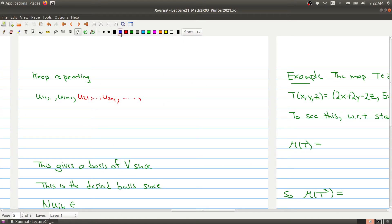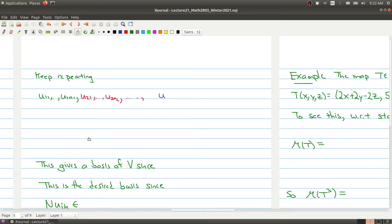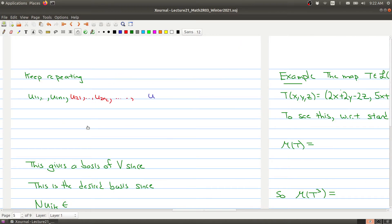So we keep repeating, and at the end we would have ul1 up to uLnL. We have that this is a basis for null N, the red guys are a basis for null N squared, and then everything here is now a basis for the vector space V. This gives us a basis for our vector space V since we know that the null space of N to the L is equal to V because we have a nilpotent operator.